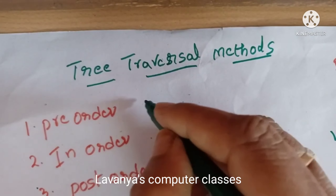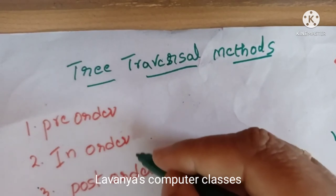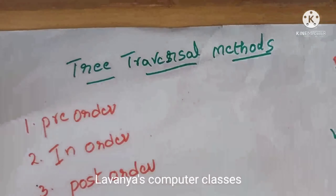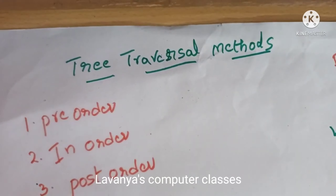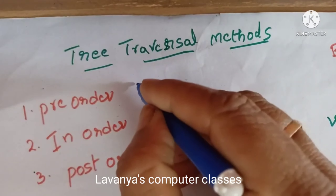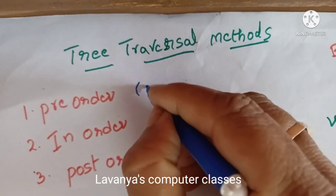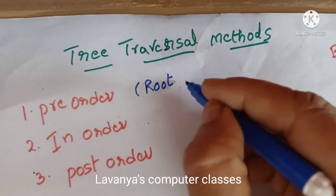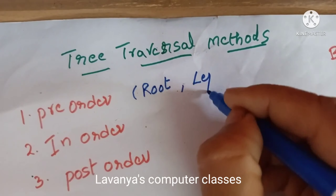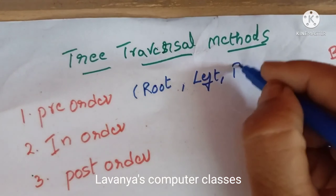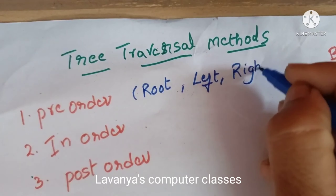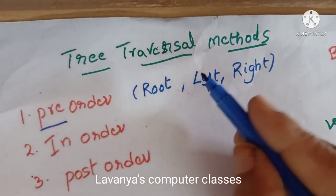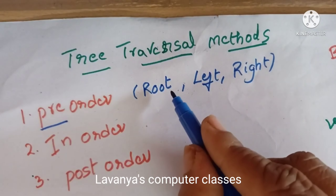What is the meaning of pre, in, and post? Pre means before — beginning. In means middle. Post means after. So for pre-order, pre means first, so root is the first, then left, and then right.